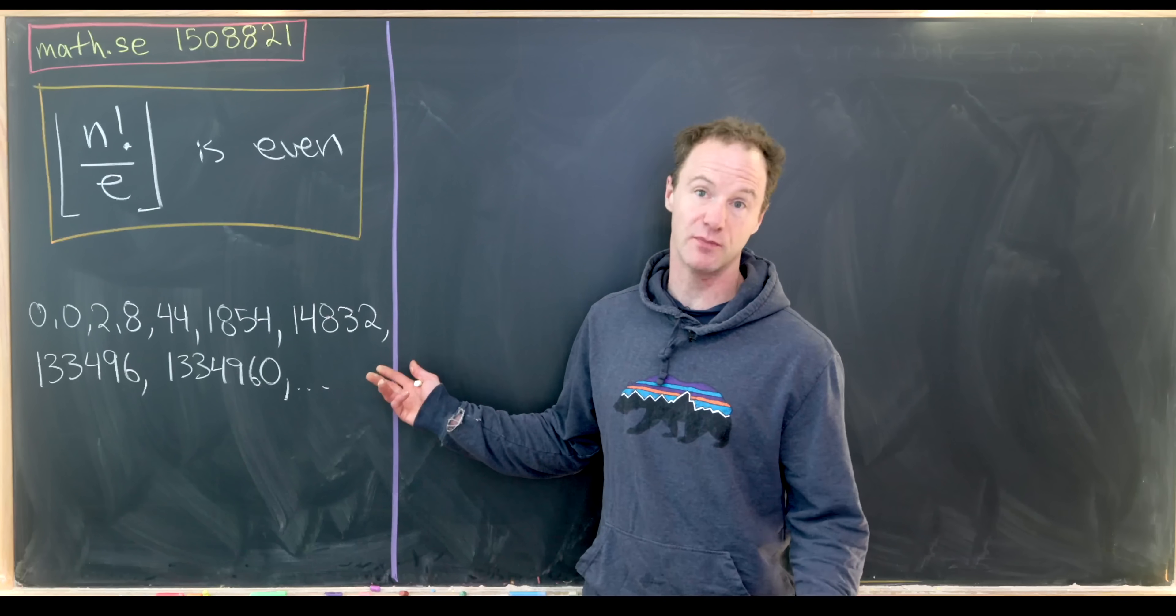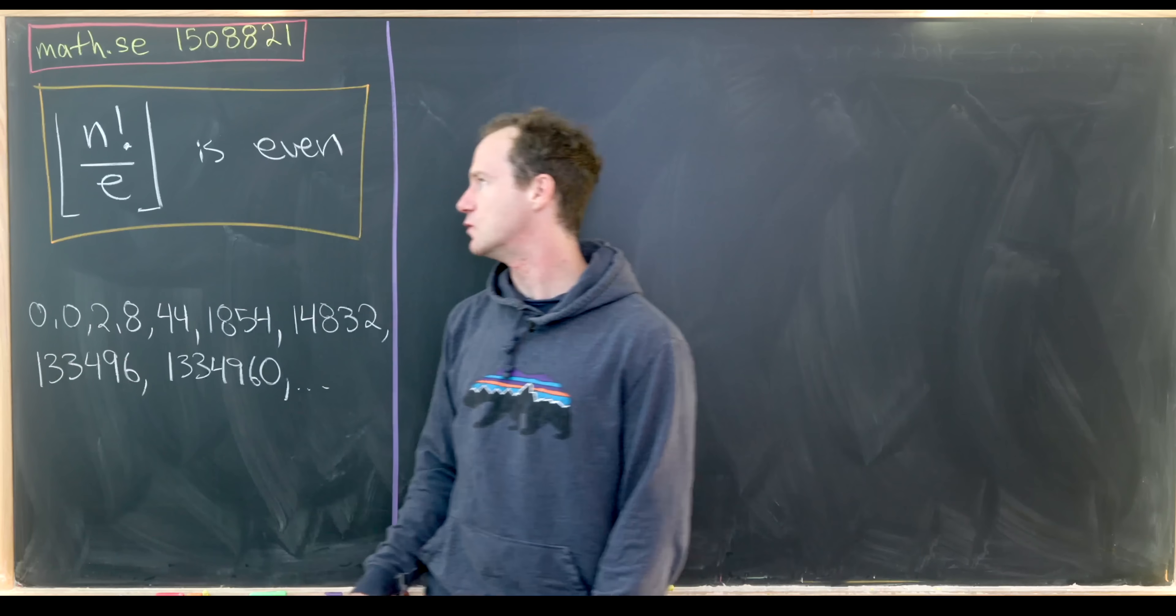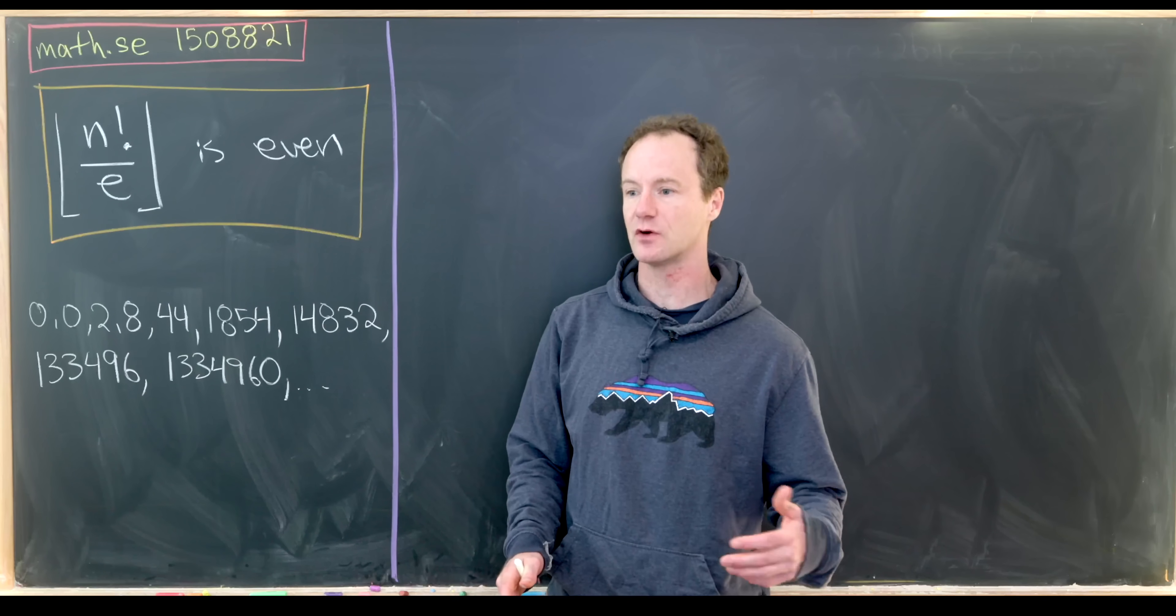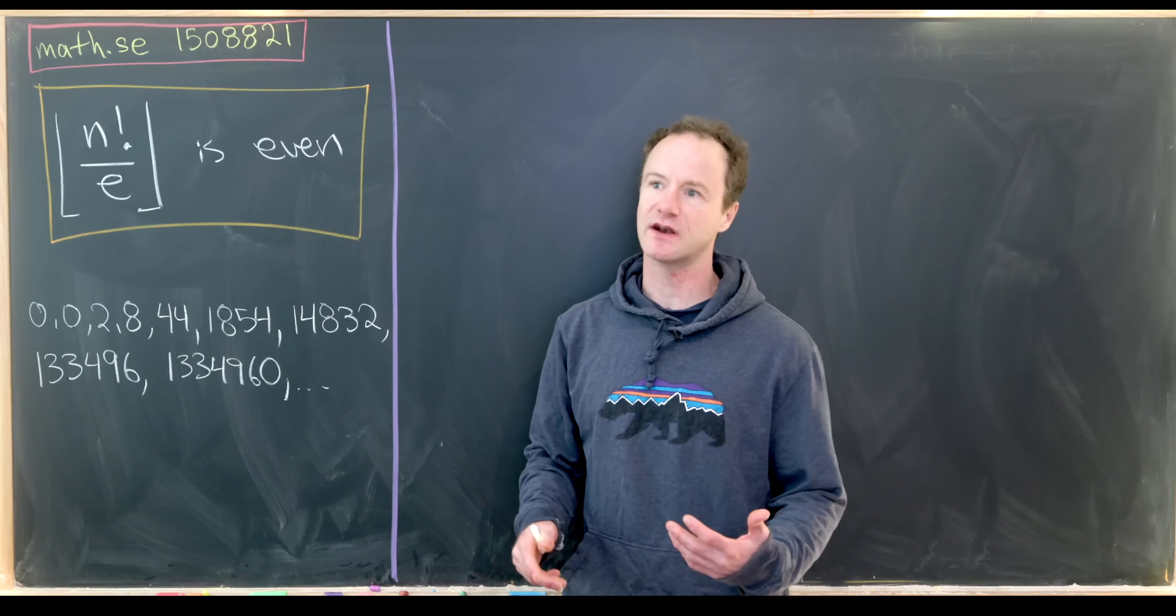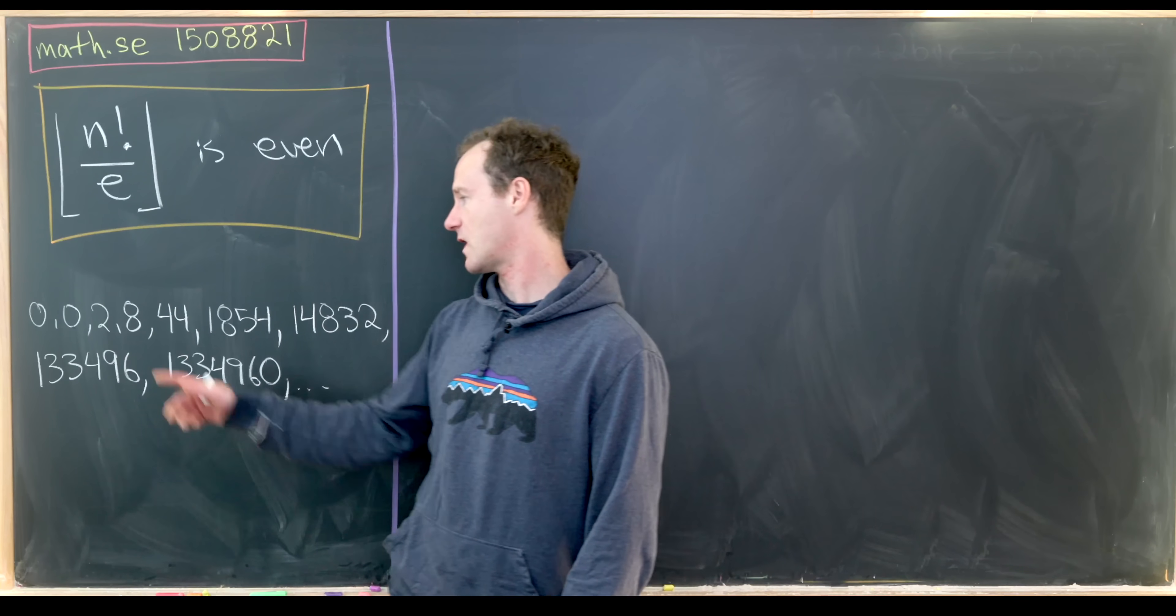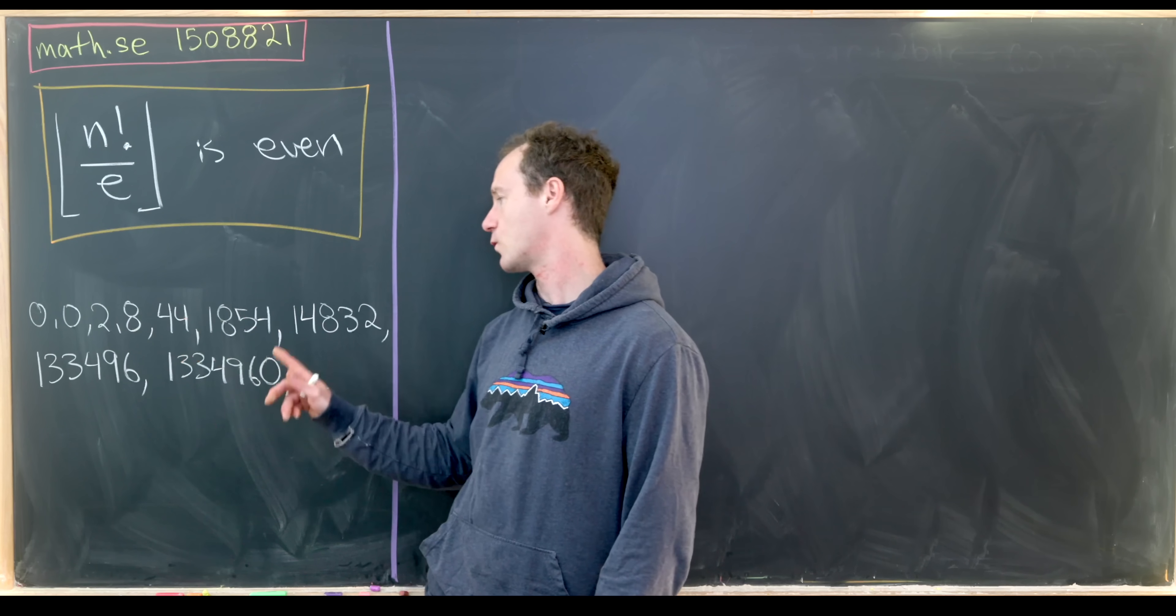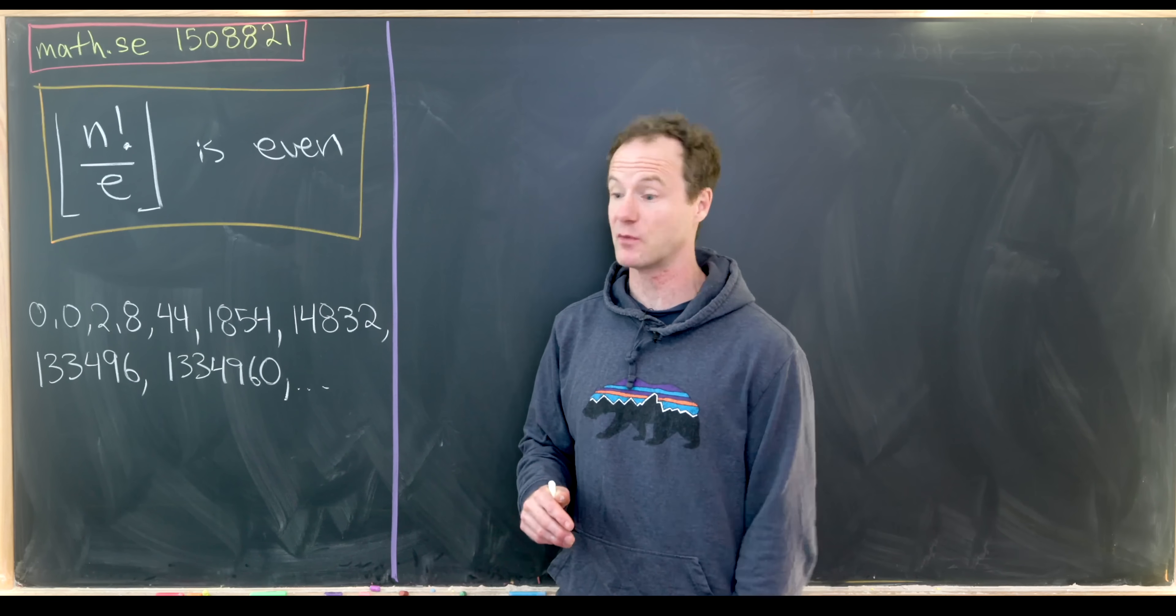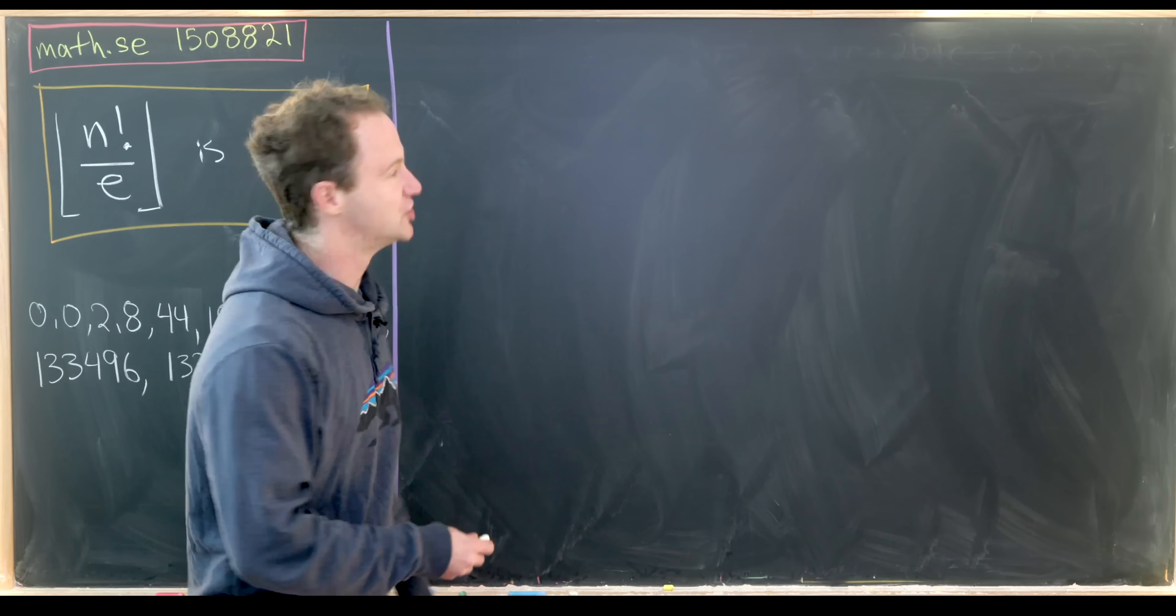So I made a list of the first couple of cases of this. For n equals 1 and 2, we'll clearly get zero because we'll have 1 factorial and 2 factorial, which is 1 and 2 respectively. Those are each less than e, which means we get a number between 0 and 1, the floor will be 0. And then after that, we'll have 3 factorial over e, its floor is 2, and then we have 8, 44, 18, 54, and so on. You can see that all the numbers on the board are even. I think we're good to go. Just kidding. So let's see how we'll do this in general.